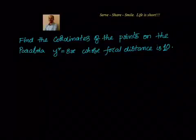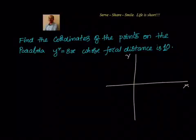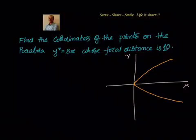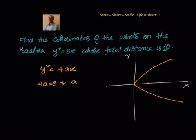Let's draw a rough figure. We have the x-axis and y-axis. For y² = 8x, the vertex is at (0, 0). We know it opens to the right. Comparing with y² = 4ax, we get 4a = 8, which means a = 2. So the vertex is at (0, 0) and the focus is at (2, 0).